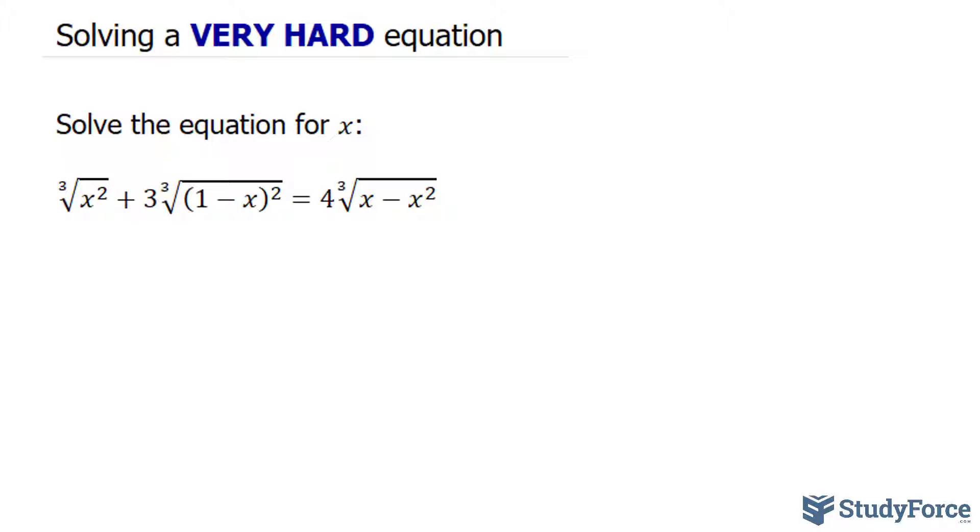Okay, hopefully it didn't frustrate you as much as it frustrated me. What we have here is the cube root of x to the power of 2 plus 3 times the cube root of that expression, raised to the power of 2, is equal to 4 times the cube root of x minus x squared.